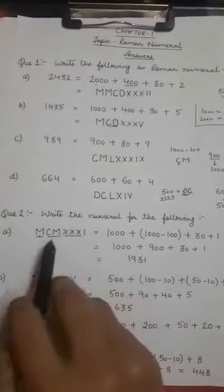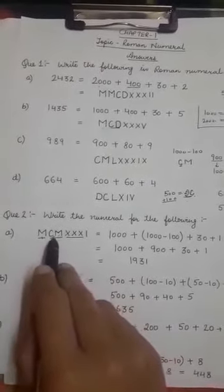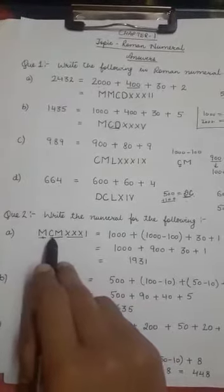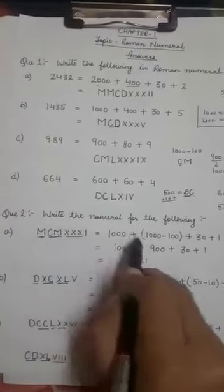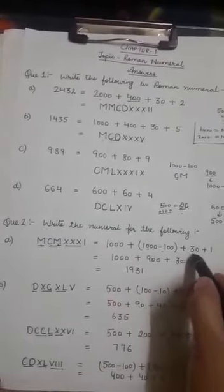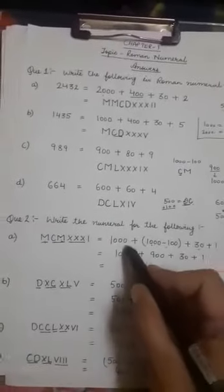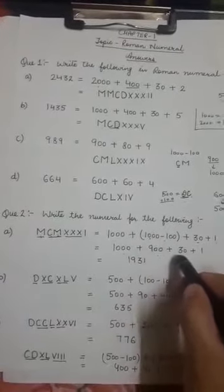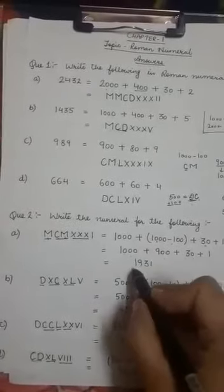M is for 1000. Then for CM, C is on the left of M. So I will subtract 100 from 1000. 1000 minus 100. Then XXI is for 30 plus 1. 1000 plus 900 plus 30 plus 1. It will make 1931.